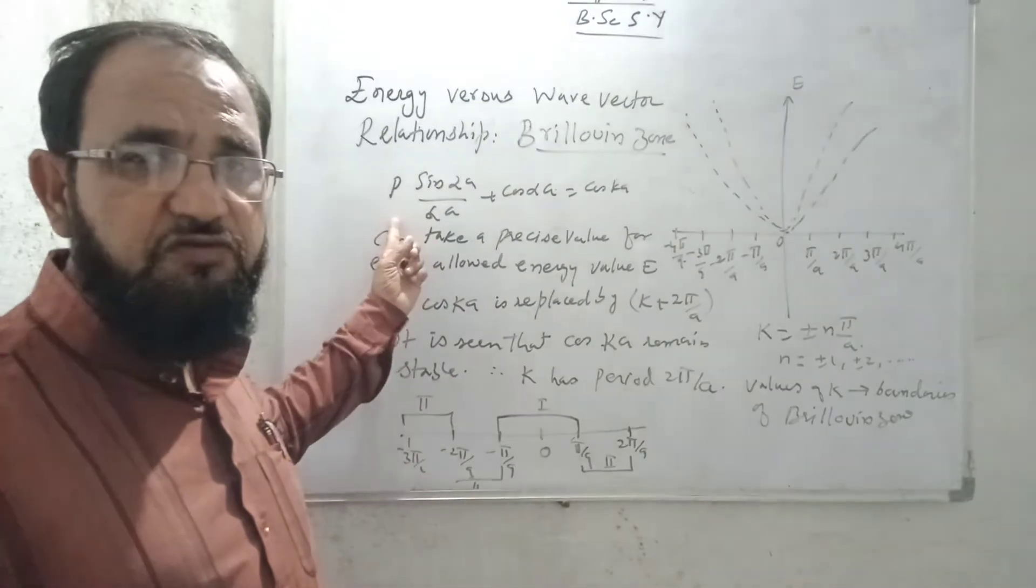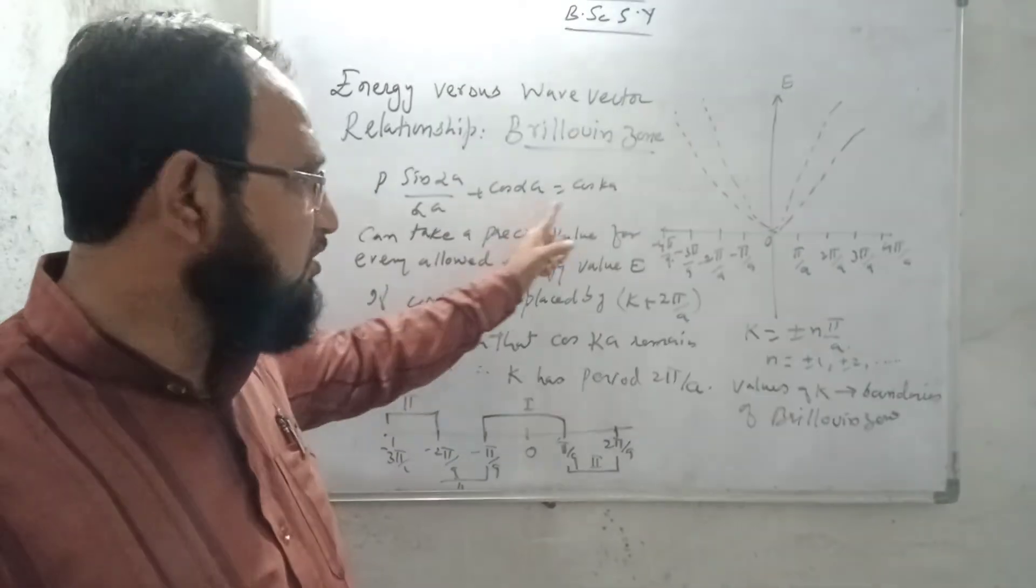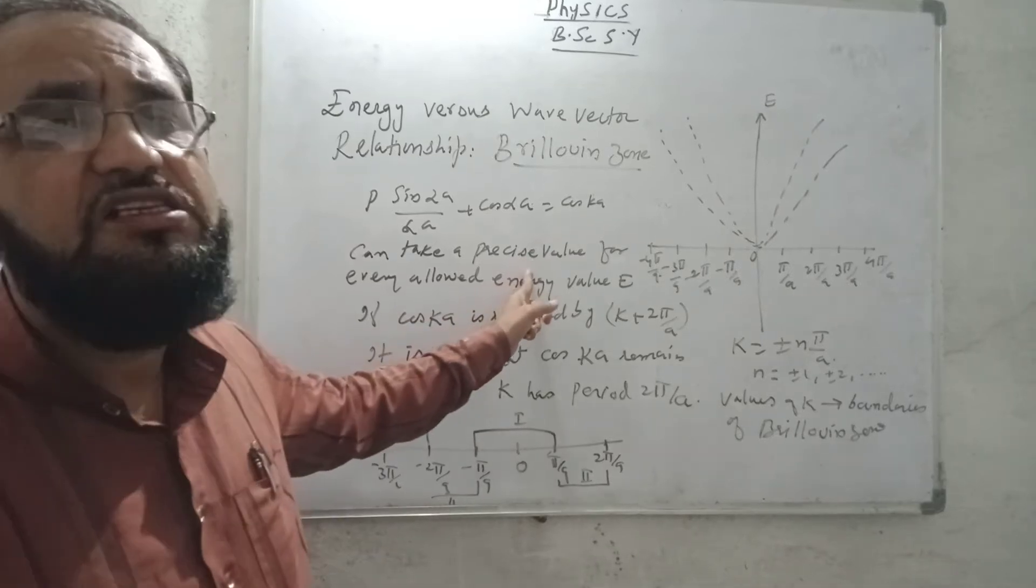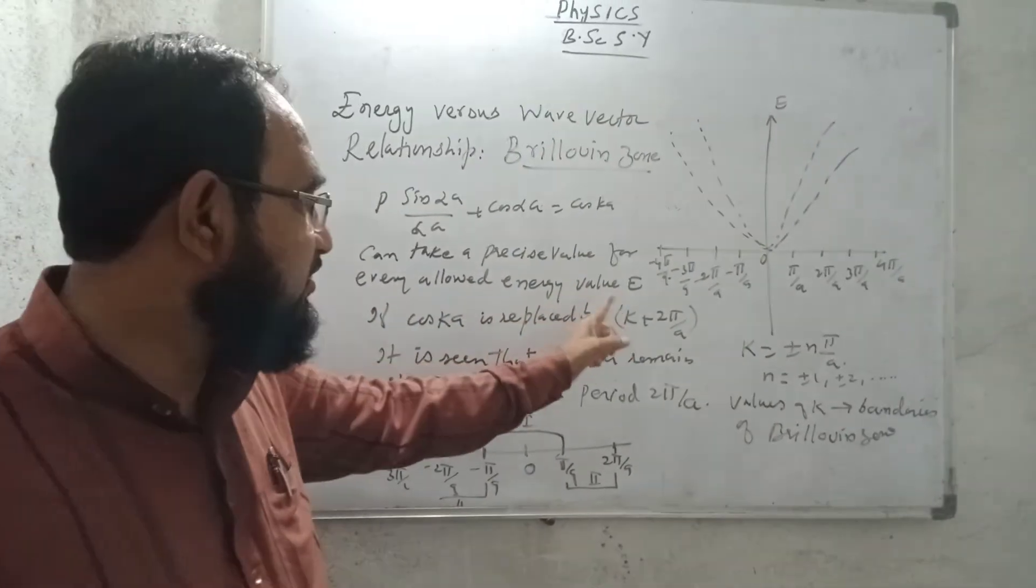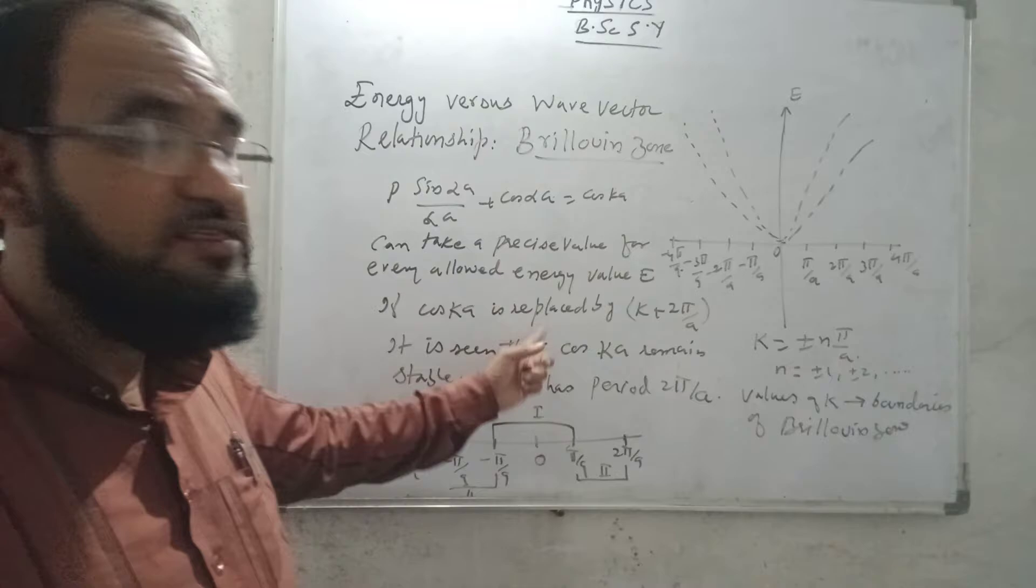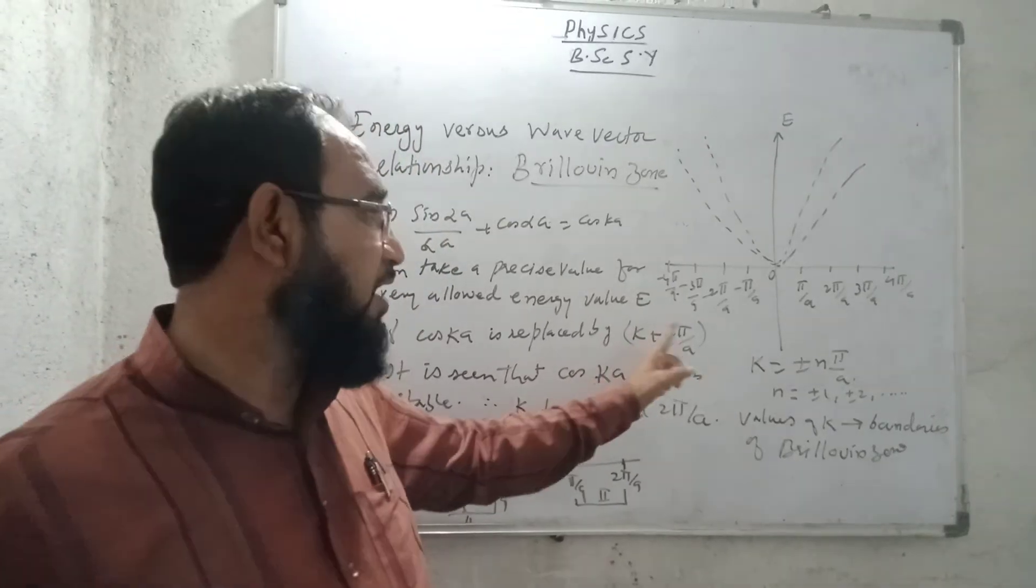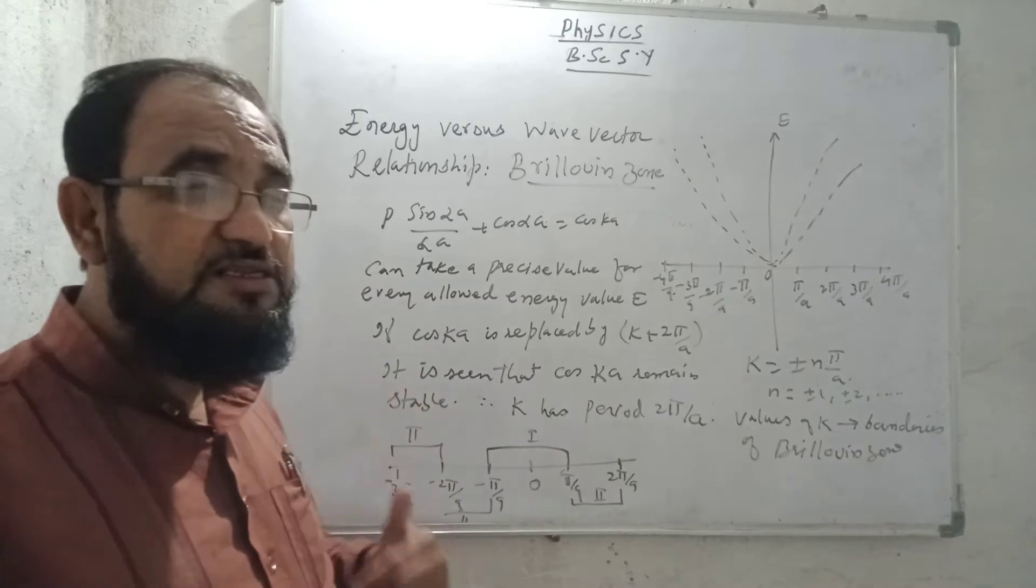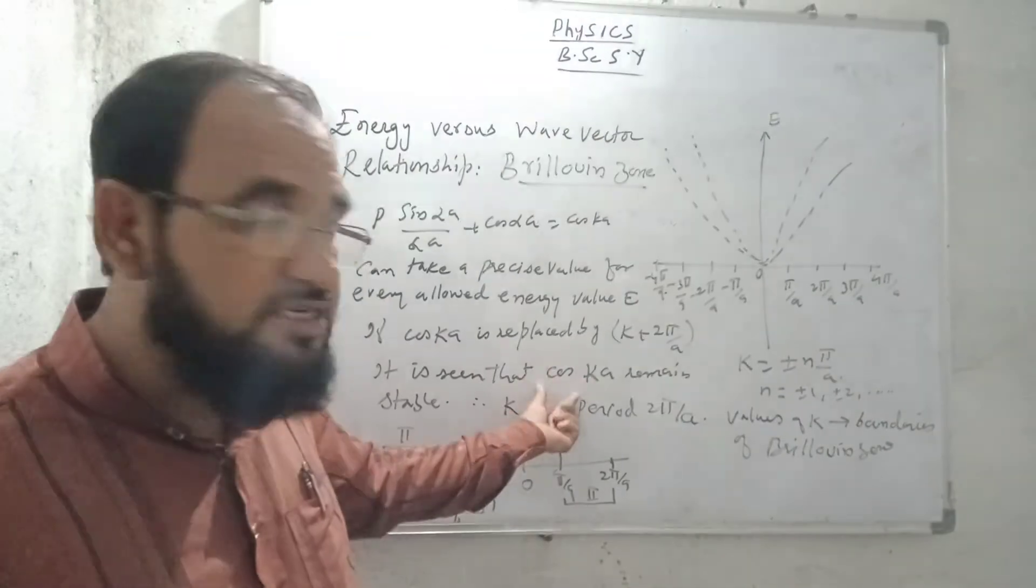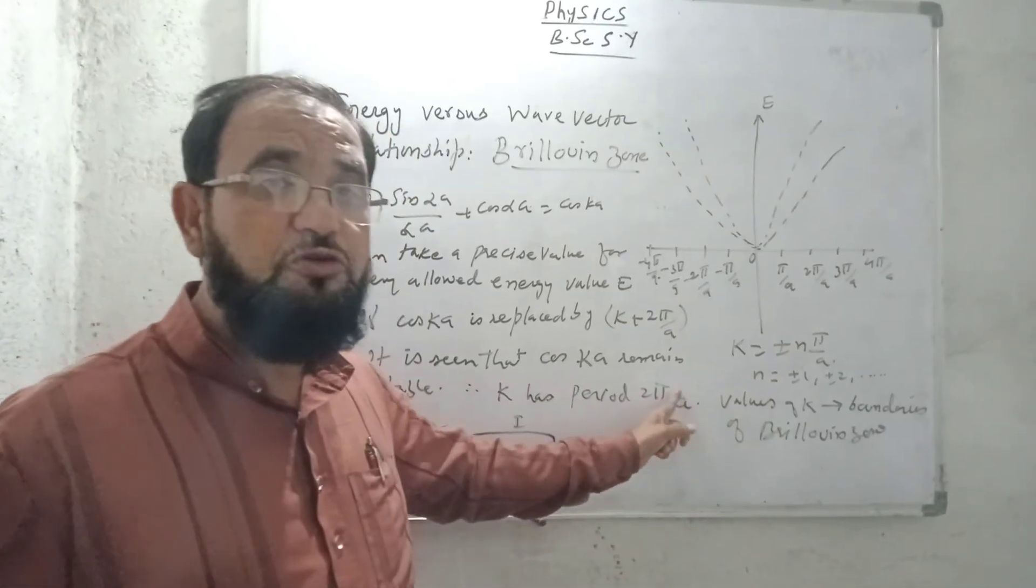So we know the equation, this equation which we obtained in the Kronig-Penny model as P sin αA upon αA plus cos αA is equal to cos KA. Now this equation, it can take a precise value for every allowed energy value E. If I introduce a period for K, K is incremented by 2π/A. It is seen that the value of cos KA will remain unchanged, it will remain stable. It means that the K has the period of 2π/A.